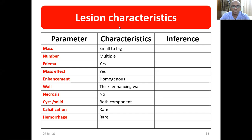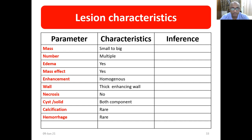Looking at lesion characteristics on CT or MRI, the lesion is mostly small. It is usually single, but may be multiple. There is small edema and mass effect. The enhancement pattern is mostly homogeneous. In the solid component you may find a thick enhancing wall. There is no necrosis. Both cystic and solid components may be found. Calcification and hemorrhage are rare.